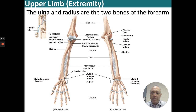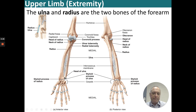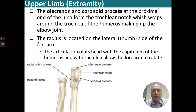The ulna and the radius are the two bones of the forearm. The radius is lateral and the ulna is medial, with an interosseous membrane in between. The head of the ulna articulates with the styloid process of the radius and into the carpals of the hand. The olecranon and the coronoid process at the proximal end of the ulna form the trochlear notch, which wraps around the trochlea of the humerus, making up the main elbow joint.